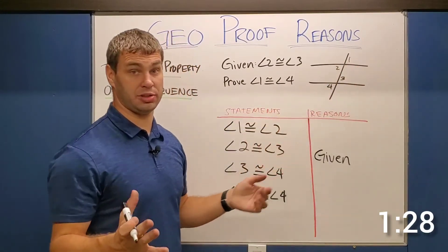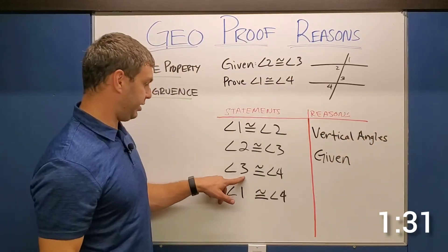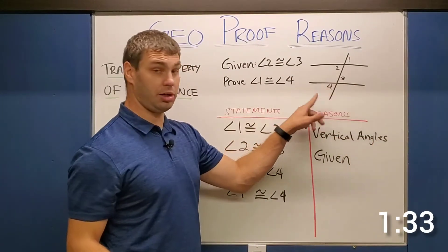Well, notice those are vertical angles. Okay. What about our third line? Angle three is congruent to angle four, also vertical angles.